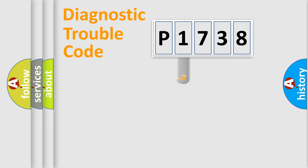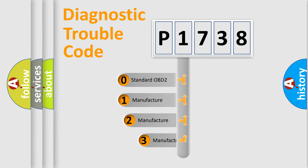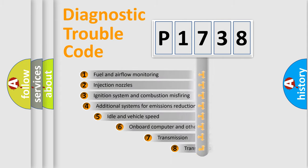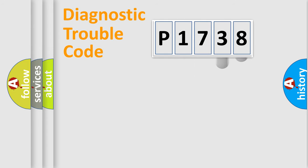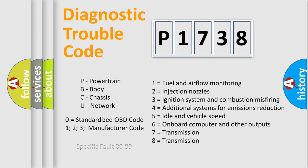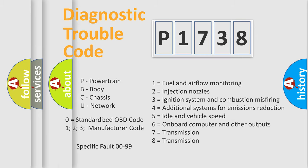This distribution is defined in the first character of the code. If the second character is expressed as zero, it is a standardized error. In the case of numbers 1, 2, or 3, it is a more specific, car-specific error. The third character specifies a subset of errors. This division is valid only for the standardized DTC code, and only the last two characters define the specific fault of the group.